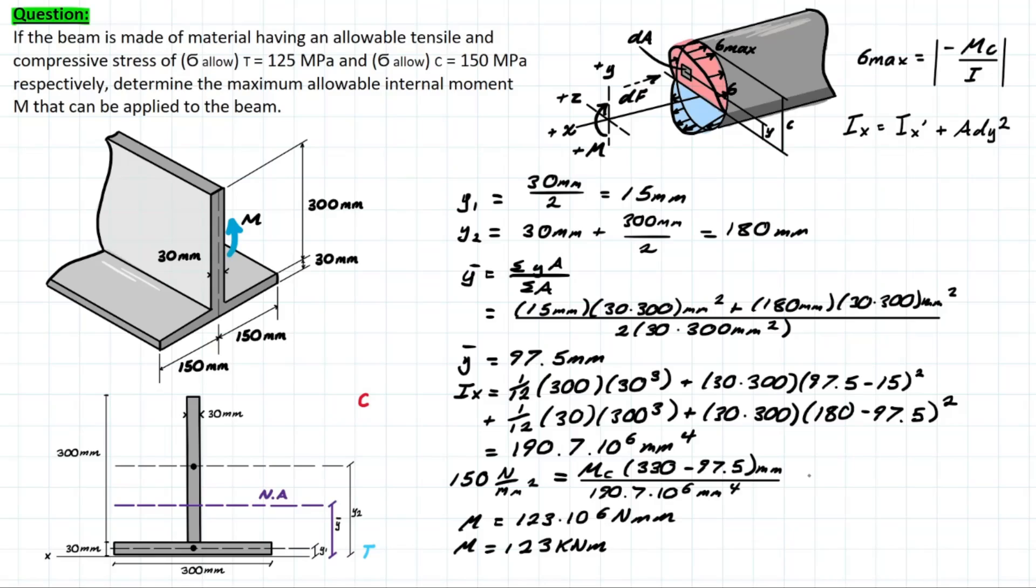Similarly, we can do the same for the tensile side, except now this distance is simply going to be y-bar. So we have 125 equals m times 97.5, that's over the inertia value, once again, times 10 to the 6. Solving for m, we have 244.5 times 10 to the 6 newton-millimeters, otherwise 244.5 kilonewton-meters.